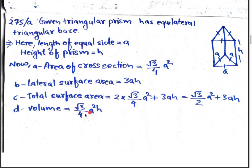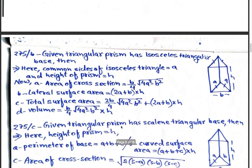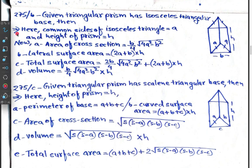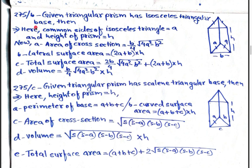To find the volume of this prism, we use the formula V = (√3/4)a²h. All this is provided for the solution of Question 275a. Part b states: the given triangular prism has an isosceles triangular base.